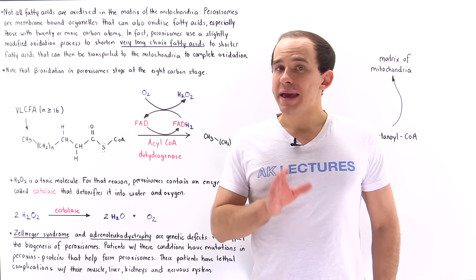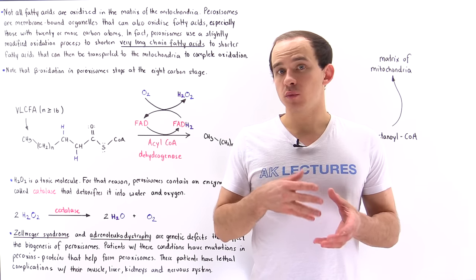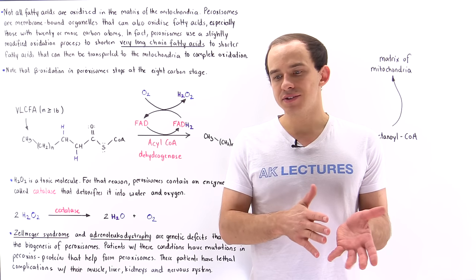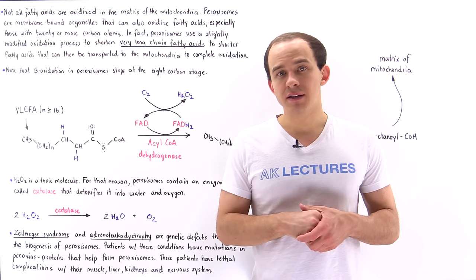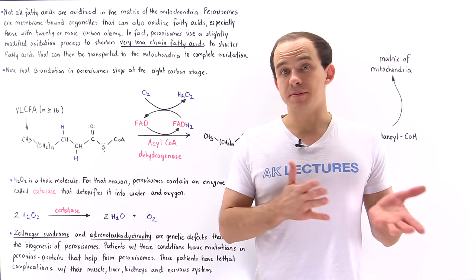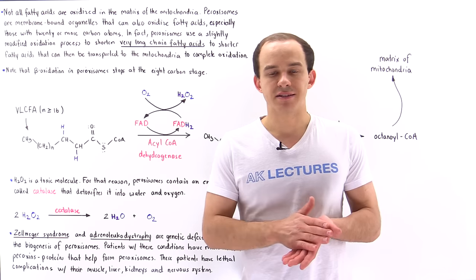So as we now know, the matrix of the mitochondria is where we break down our fatty acids. We can oxidize the fatty acids into acetyl-coenzyme molecules and then we can use those molecules to generate ATP molecules via the citric acid cycle.